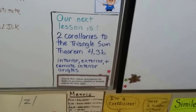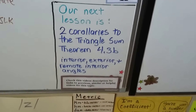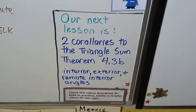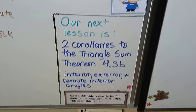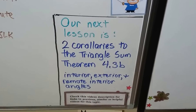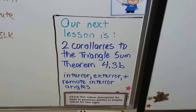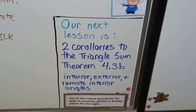Our next lesson covers two corollaries to the Triangle Sum Theorem — that will be 4.3b — and we're going to talk about interior, exterior, and remote interior angles.